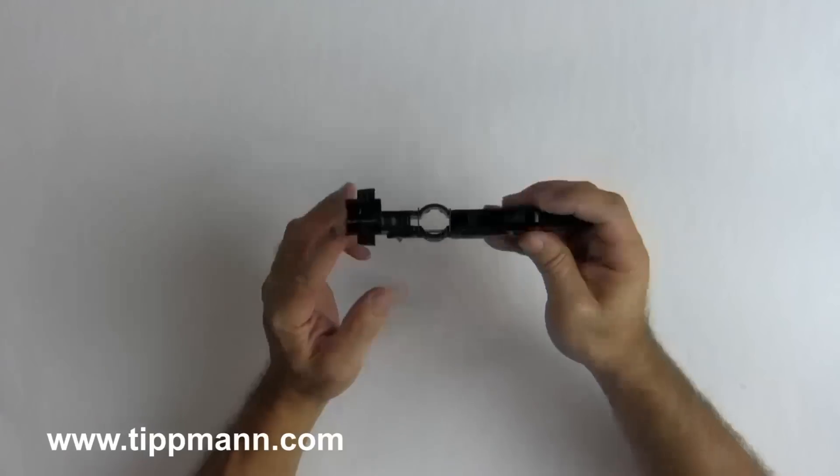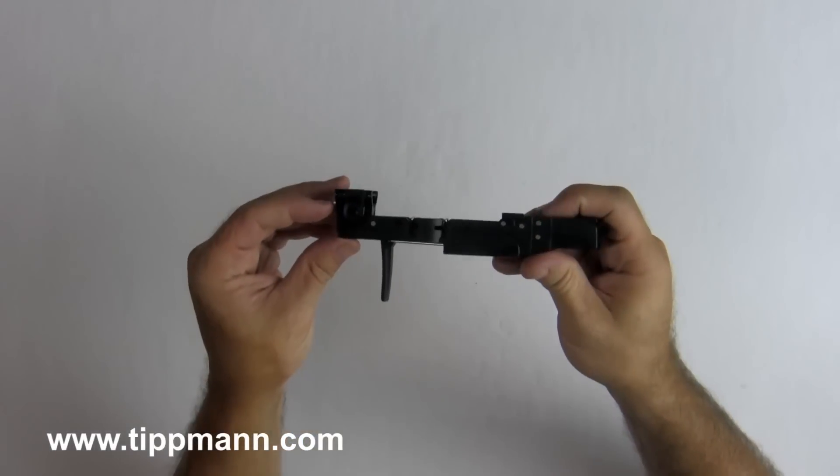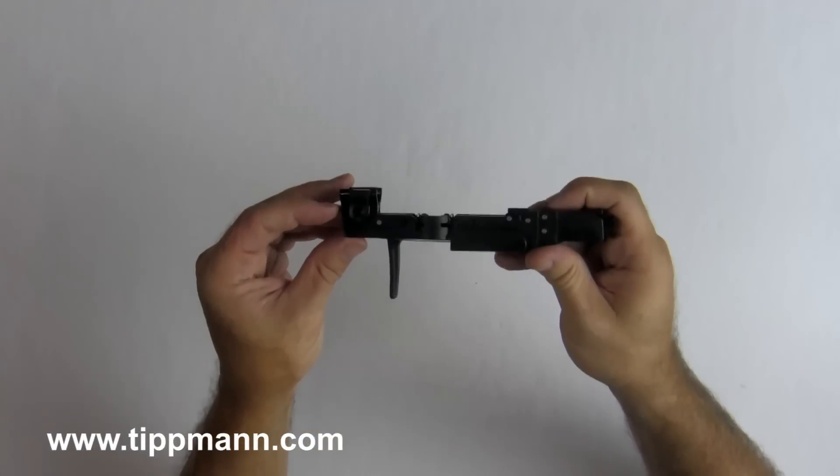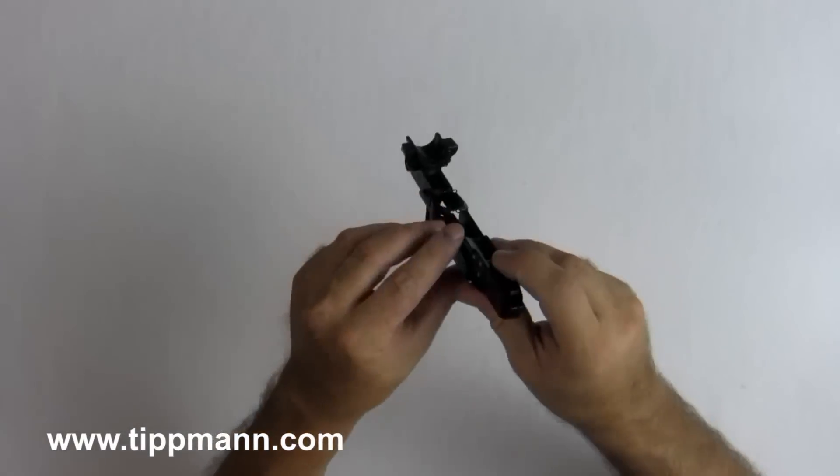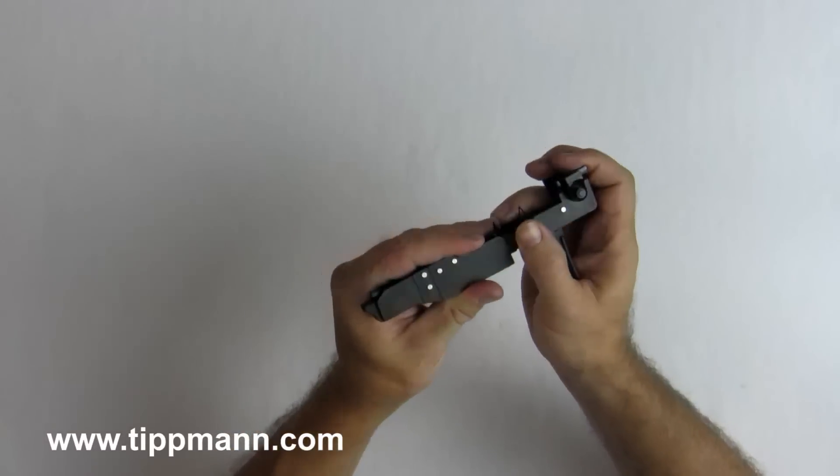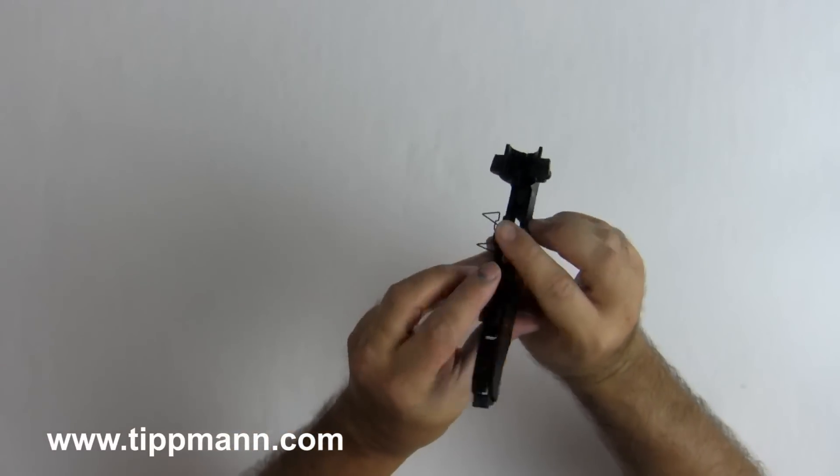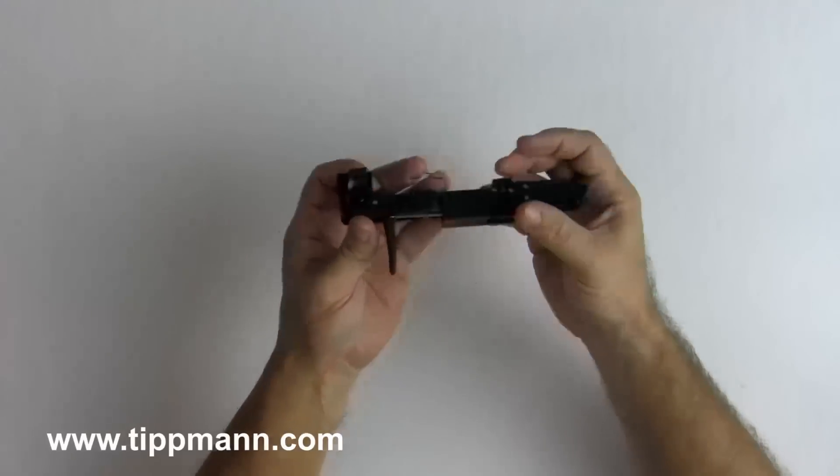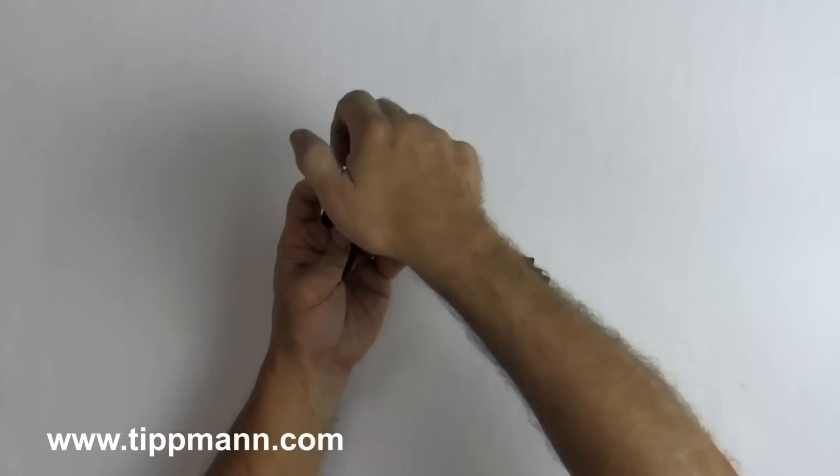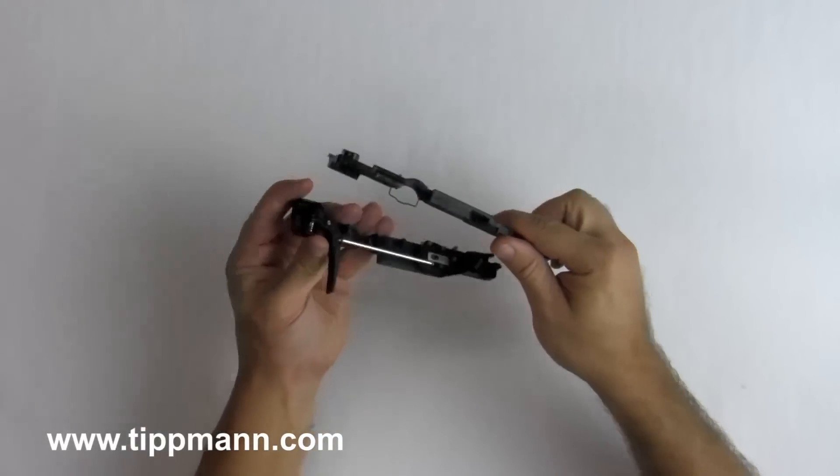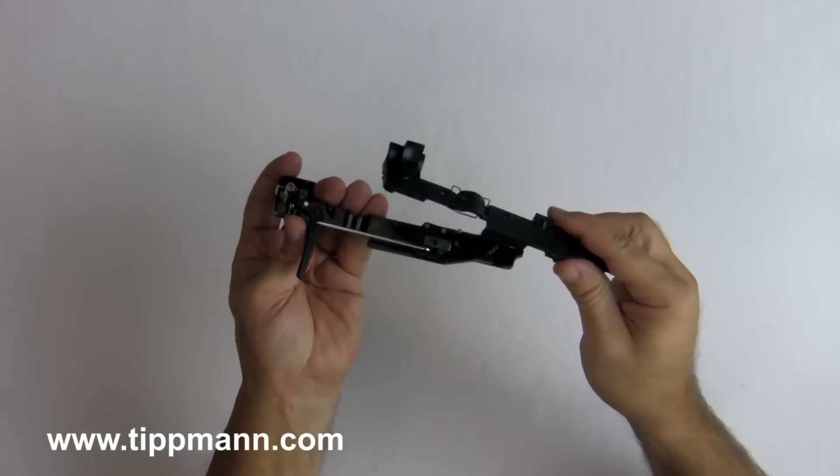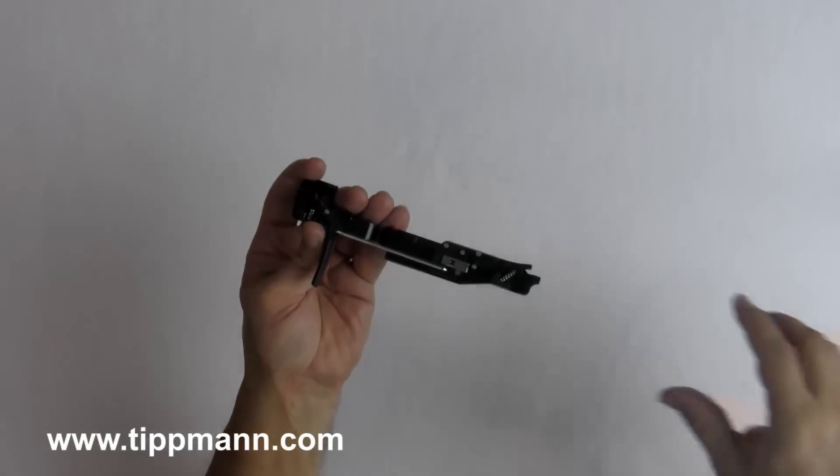To remove the trigger we have to open up the trigger assembly, this trigger group. So on the right side there's a wire clip and you just slide that up and then you can remove the left hand side of the trigger group. Set that aside.